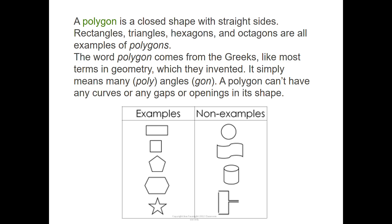Before we go any farther, I feel like we should probably define polygon a little bit better because we're using that term quite a bit in our lessons. A polygon is a closed shape with straight sides. Rectangles, triangles, hexagons, and octagons are all examples of polygons. The word polygon comes from the Greeks, like most terms in geometry, which they invented. It simply means many, which is poly, angles, which is gon. A polygon can't have any curves or any gaps or openings in its shape.